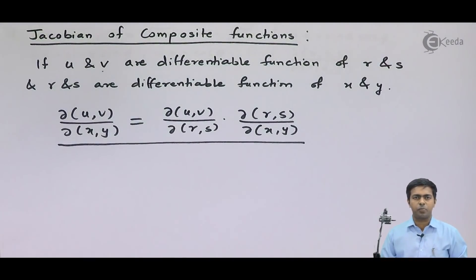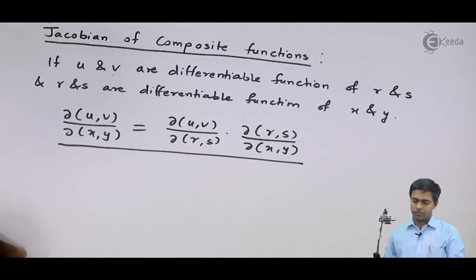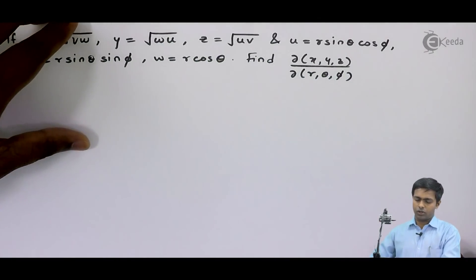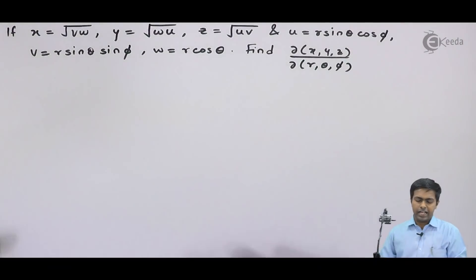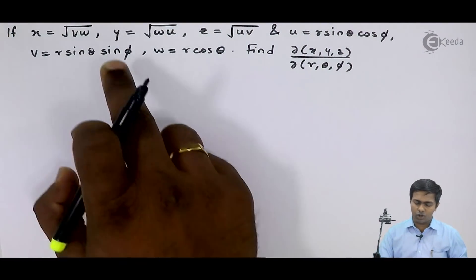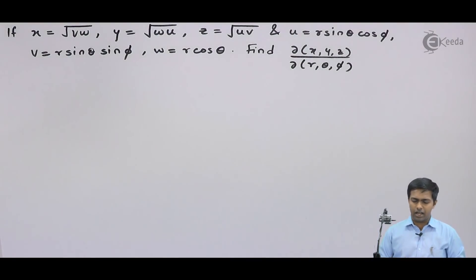Now to explain this concept in detail, let's see one example. Here x, y and z are given in terms of u, v and w — that is, x, y and z are functions of u, v and w.